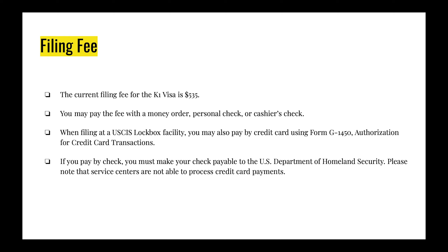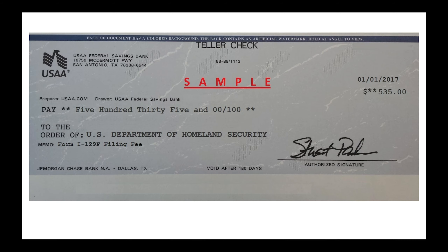When filing at the USCIS lockbox, you may also pay by credit card using Form G1450. If you have questions about credit card payment, write in the comments and we'll post a link to download that form. If you pay by check, make it payable to the US Department of Homeland Security. Note: service centers cannot process credit card payments, and absolutely no cash. Your check should indicate the Form I-129F filing fee — or petition for an alien fiance — in the amount of $535.